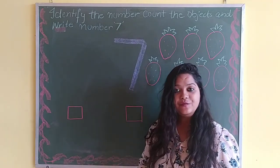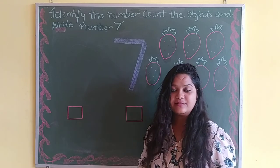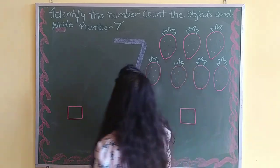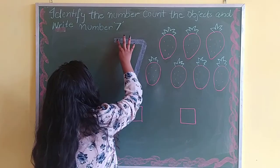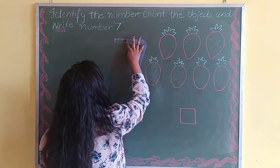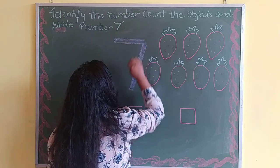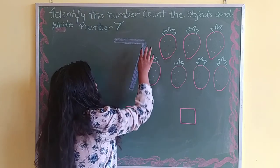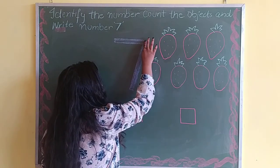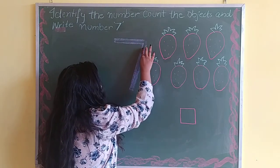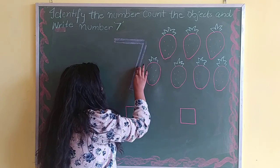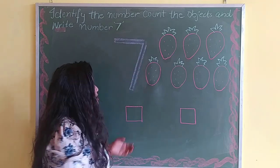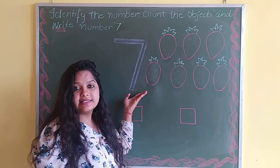Now we will trace number 7. First we will make a slipping line like this. From here we will make a slanting line like this. Number 7.